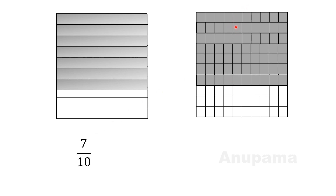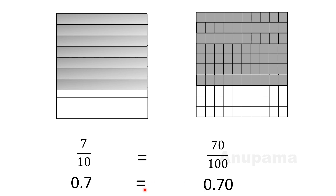Here are two equal-sized rectangles, and I have shaded both. In the first rectangle, the total number of parts is 10 and I have shaded 7 parts, so the fraction is 7/10. In the second rectangle, the total number of parts is 100 and I have shaded 70 parts, so the fraction is 70/100. Since both rectangles are equal in size, 7/10 equals 70/100 — a great example of equivalent fractions. Since a decimal is just another way to write a fraction, 7/10 written as 0.7 and 70/100 written as 0.70 are also equal.